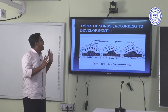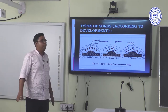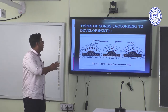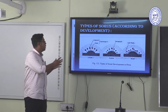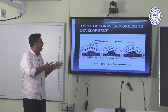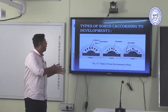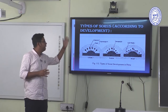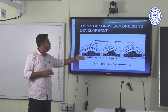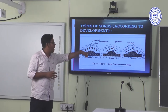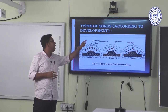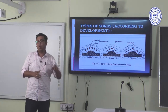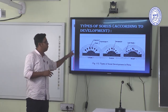This diagrammatic representation shows the development of sorus structure on the leaf of Pteridophytes: simple sorus, graded sorus in the middle position, and mixed type of sorus development.